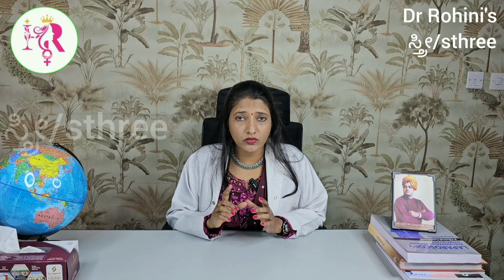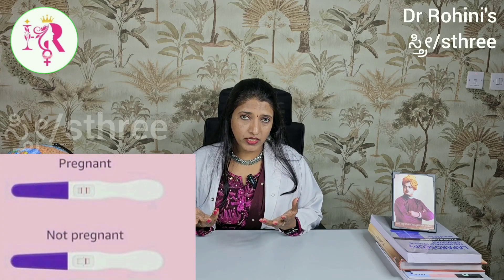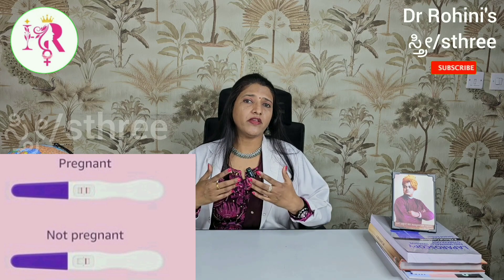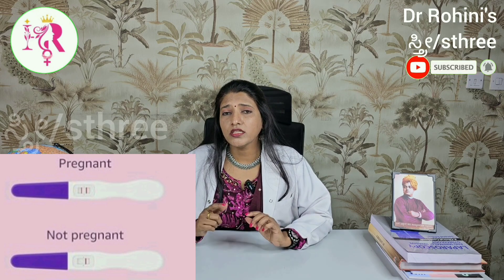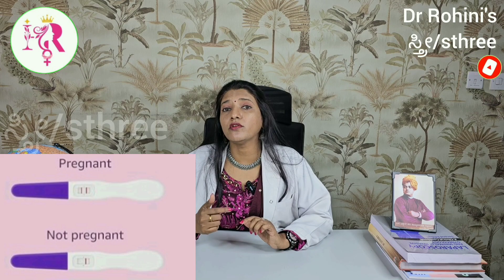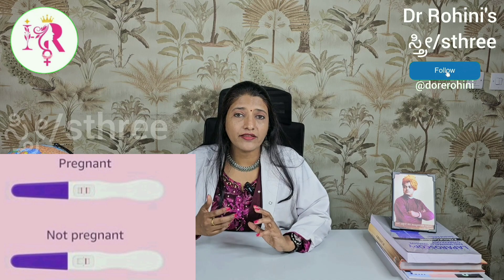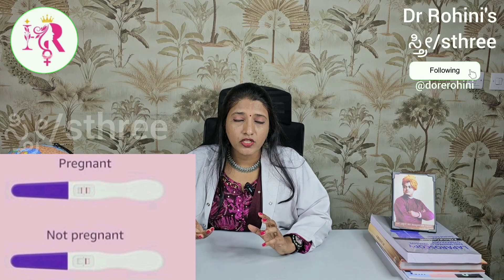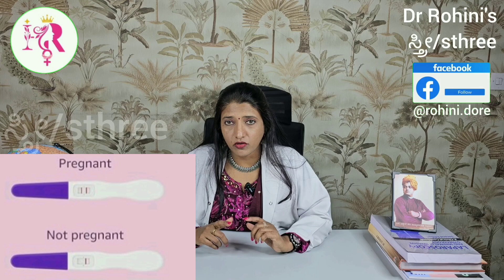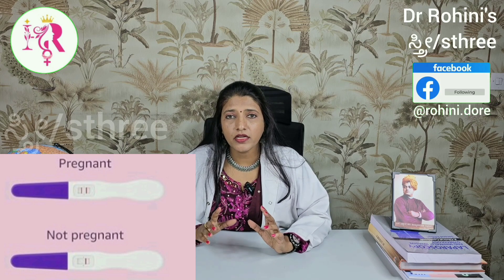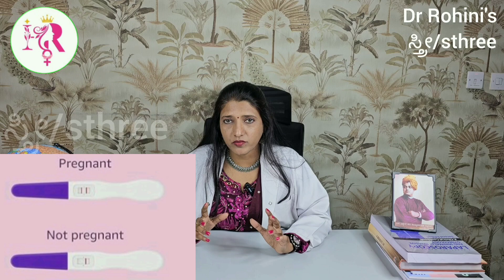In about 70% of patients with PCOD there will be irregular periods and anovulation. But in 30 to 32% of cases there may be ovulation, and sometimes patients may conceive spontaneously. Because the periods are irregular, many patients don't even know when they ovulate or when they conceive. So unexpected pregnancies can also happen — it is not impossible in patients with PCOD.